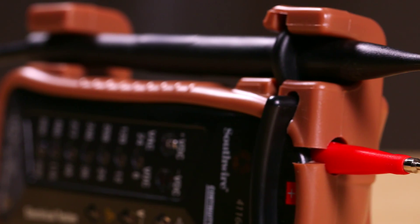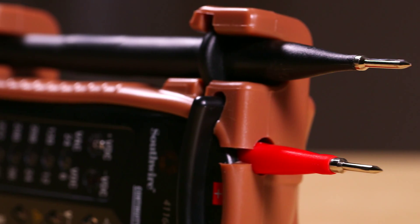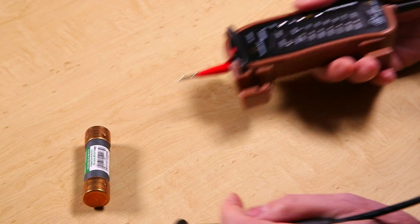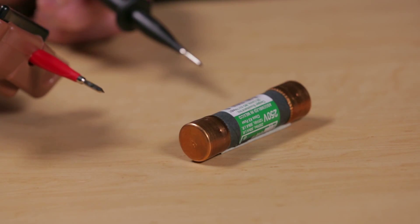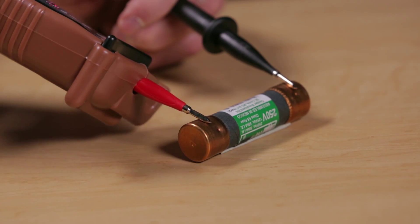fuses, and other devices. Simply touch the test leads to the device being checked. The continuity LED will glow and a beeper will sound if there is an electrical path between the two test leads.